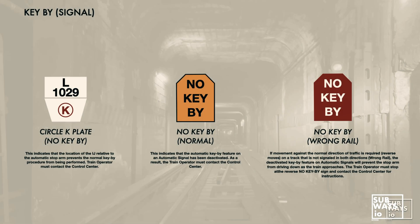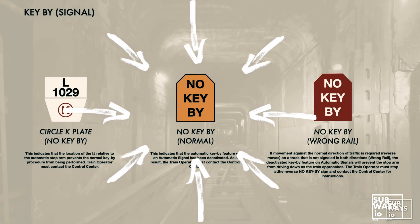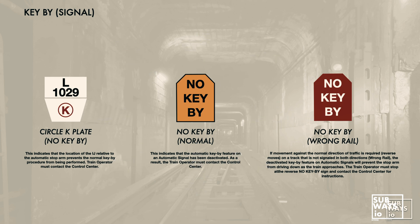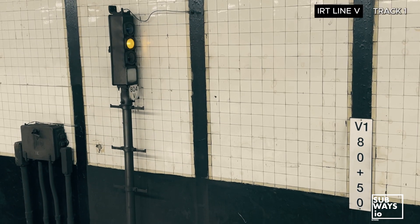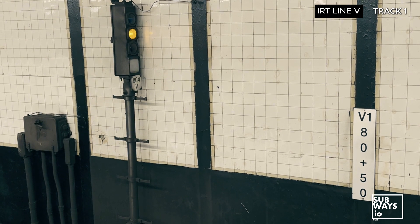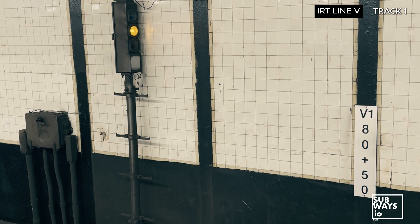Key-by signal plates: 1. Red automatic or approach signal with a no-key-by plate — this indicates that the key-by function at this signal has been deactivated. The operator must take manual action in this case. This setup is marked by a yellow no-key-by plate under the signal. 2. Red circle K plate — this plate indicates that the position of the insulated joint relative to the automatic stop arm makes the normal key-by procedure impossible. Like the no-key-by setup, this also requires manual input from the operator and is denoted by a specific plate under the signal. For any automatic or approach signals without a plate, these are standard setups, and if they lack an AK plate, you will need permission to perform a key-by.